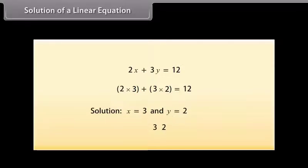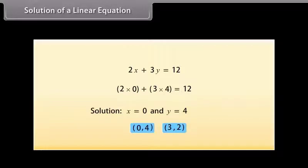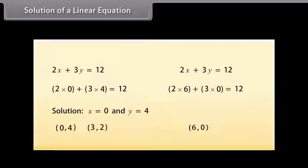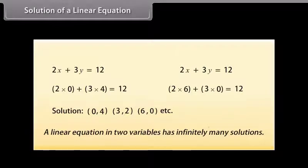We can also write this solution as (3, 2) because the value of X is 3 and the value of Y is 2. Similarly, (0, 4) is also a solution for this equation because when you substitute X is equal to 0 and Y is equal to 4 in the equation, you find that the answer becomes 12. We have found at least two solutions for this equation. Is (6, 0) also a solution? Yes, (6, 0) is also a solution because when you substitute X as 6 and Y as 0, the answer becomes 12. Many other solutions can be found, and there is no end to different solutions of a linear equation in two variables. Therefore, a linear equation in two variables has infinitely many solutions.